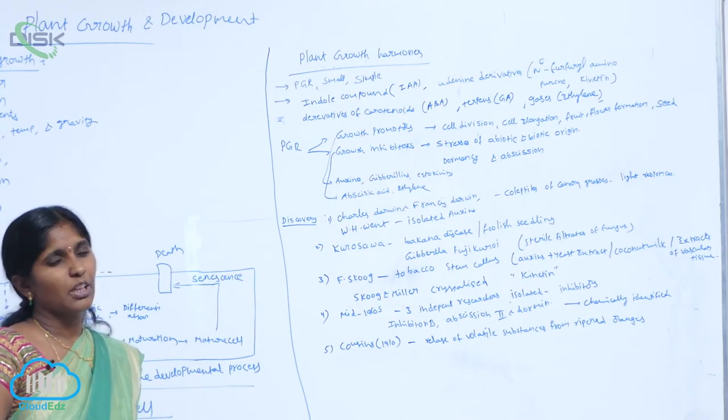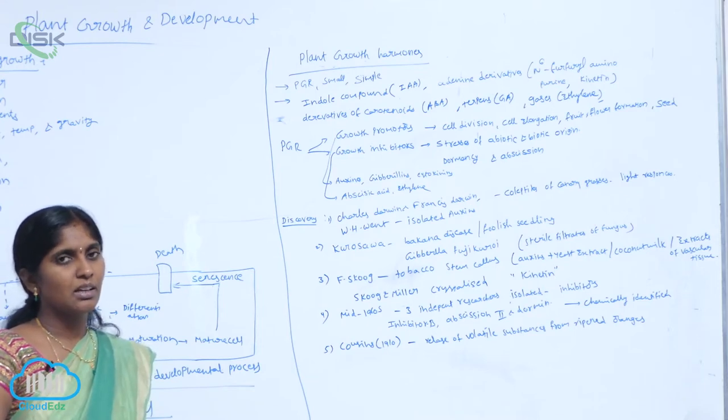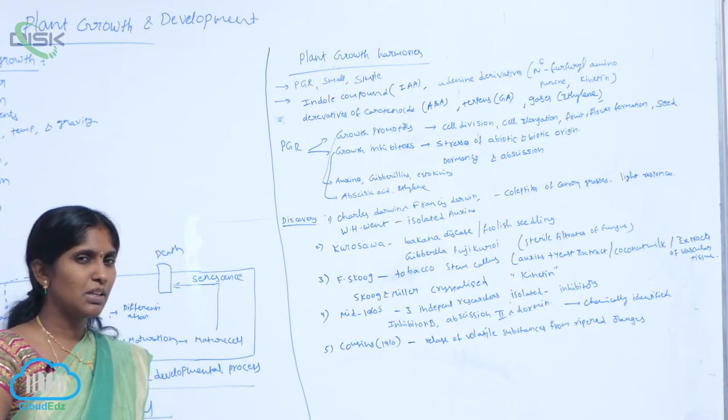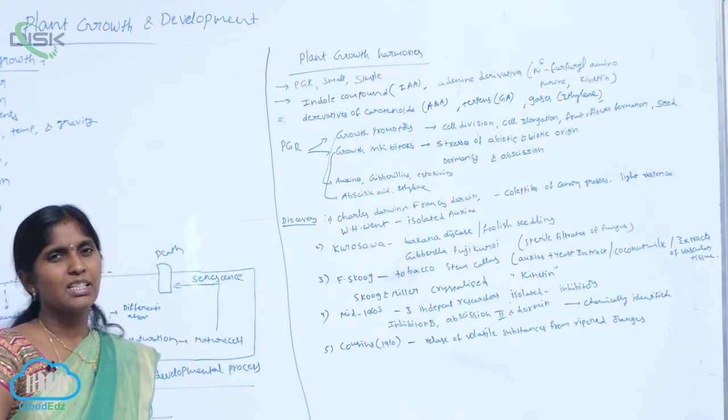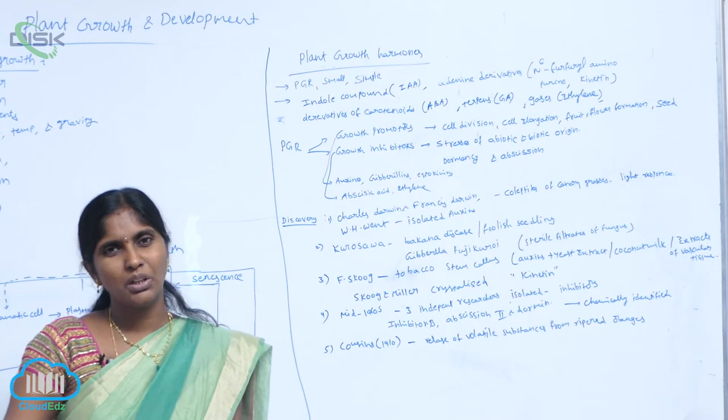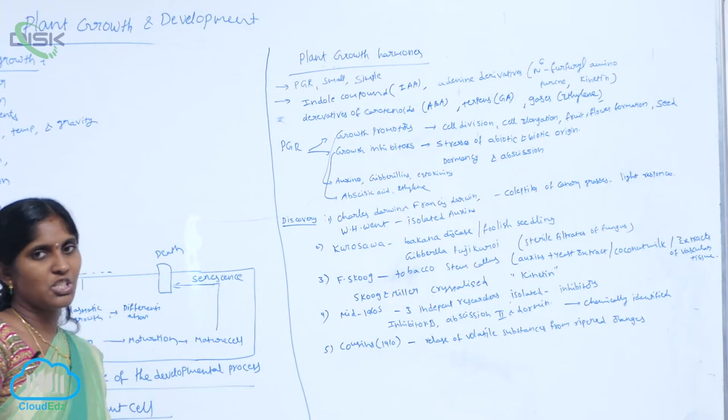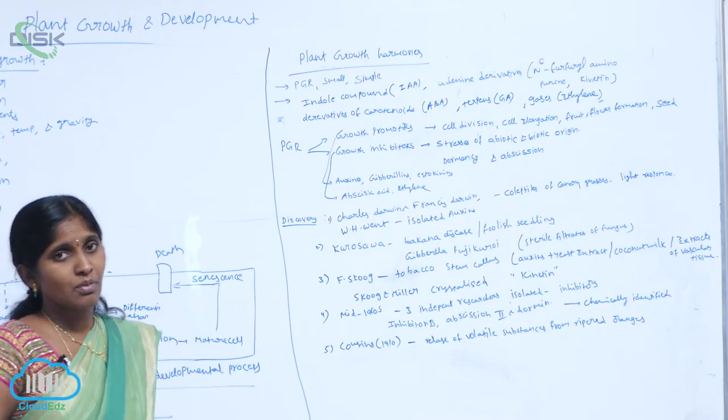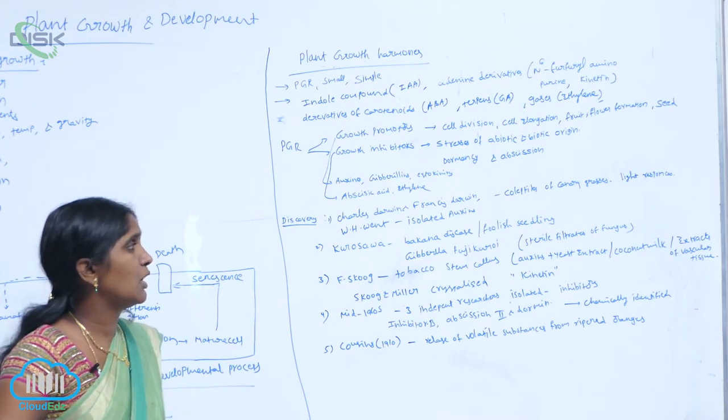When Gibberella fujikuroi sterile filtrates are infected with rice seedlings, the seedlings get neck dieback disease. The base of the spikelet is going to decompose because of effect of fungus. That is called foolish seedling disease, also called Bakanae disease, caused by Fusarium moniliforme. The sexual stage of Fusarium moniliforme is Gibberella fujikuroi.